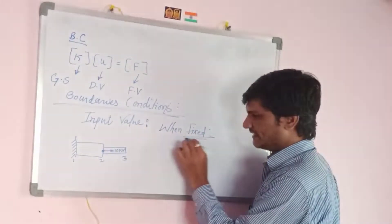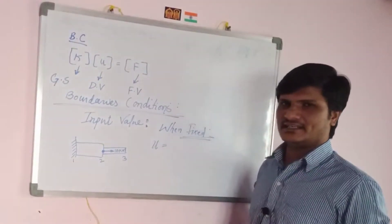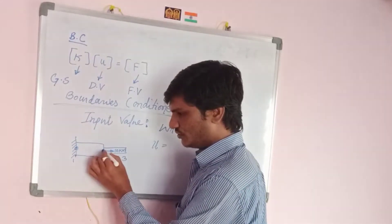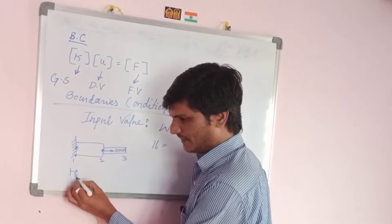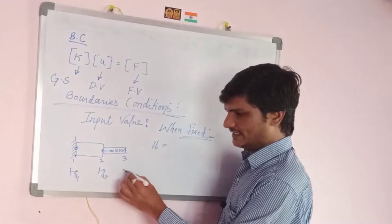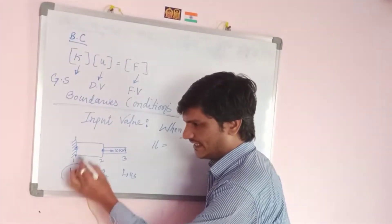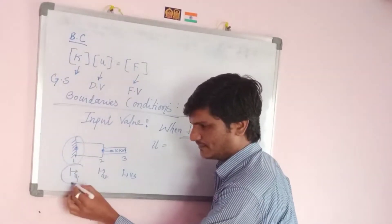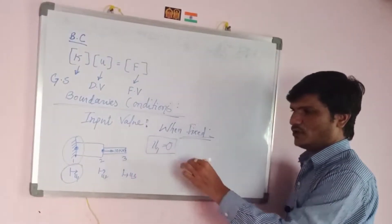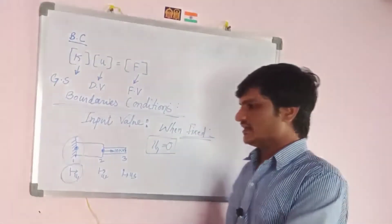When an element is fixed, the displacement at that end is taken as zero. At node 1 the displacement is u1, at node 2 it is u2, and at node 3 it is u3. Since node 1 has a fixed end, u1 = 0. This is the first boundary condition: whenever there is a fixed end, the displacement equals zero.